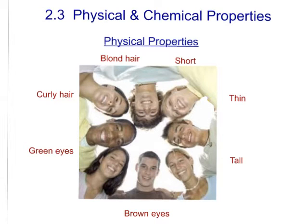Hi, and welcome to section 2.3 in our unit on matter. We're going to talk today about physical and chemical properties. Here I have a picture of some students who all have different physical properties, like blonde hair, color of eyes, short, thin, tall, muscular — those are just examples of physical properties. Probably when we're talking about people or things on a large scale, we would talk about characteristics, but in chemistry, we say properties when talking about substances.